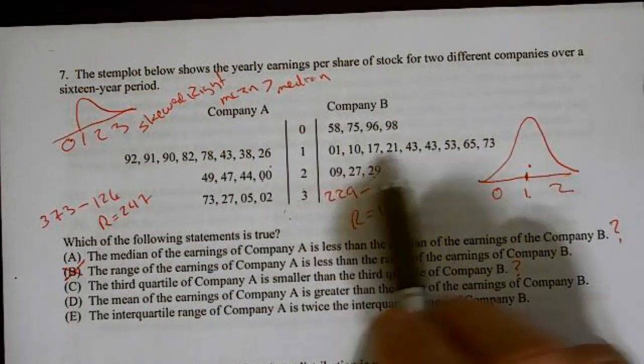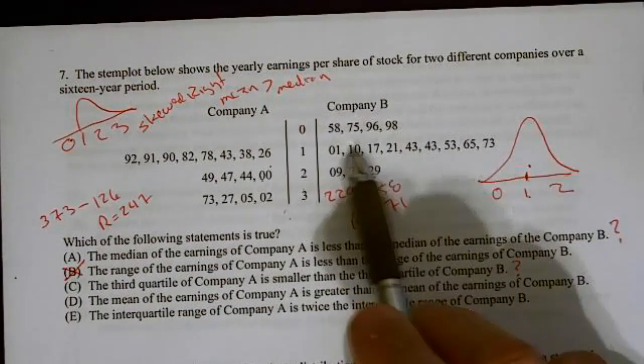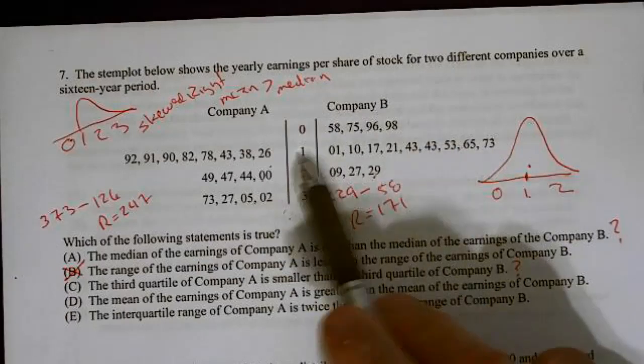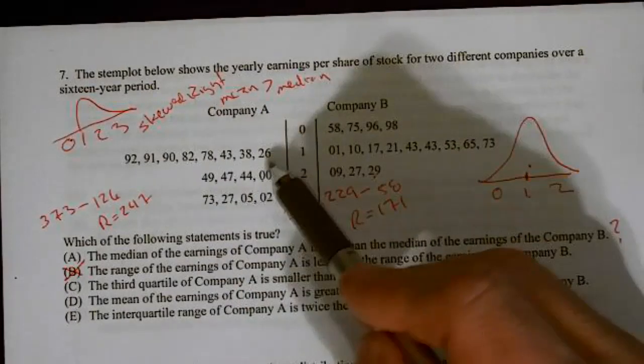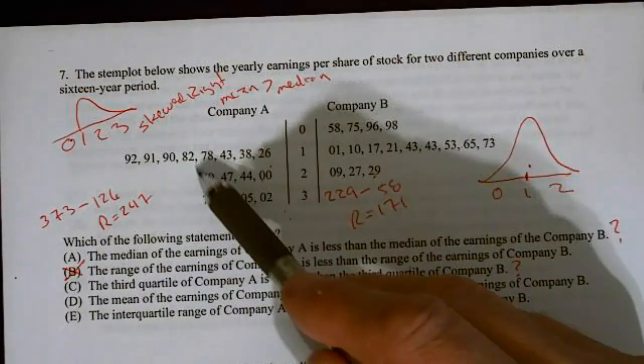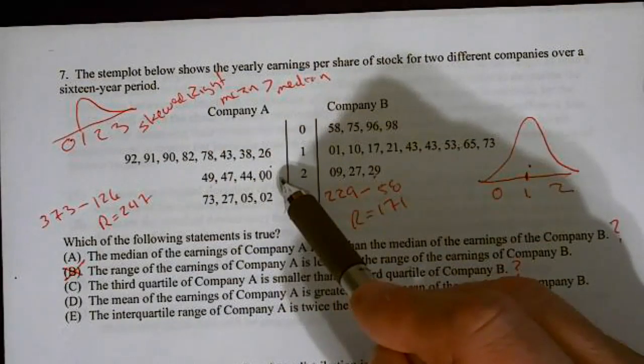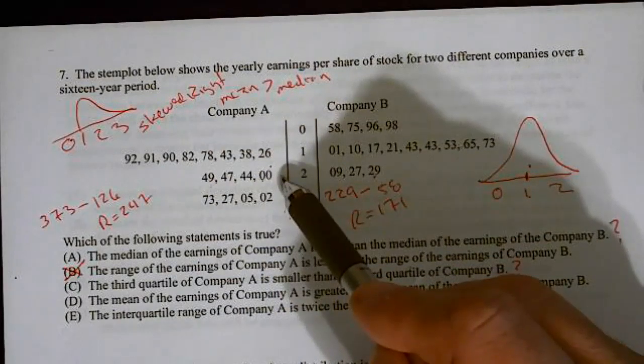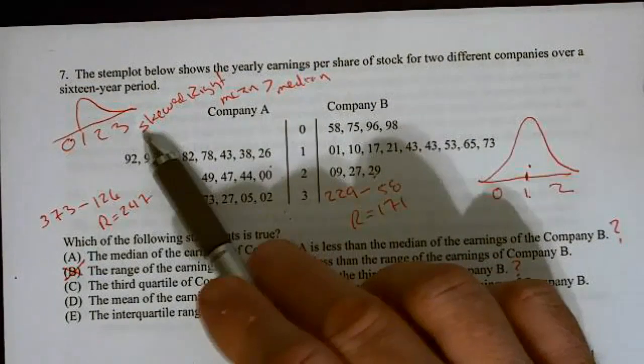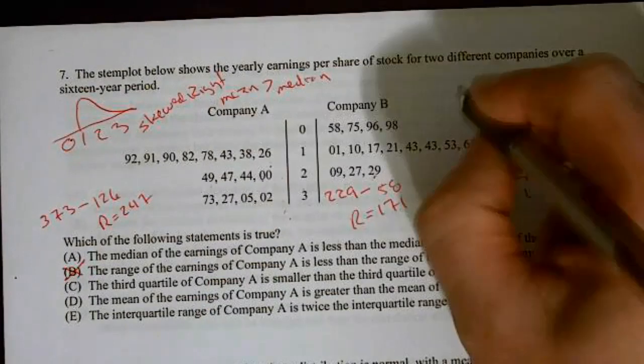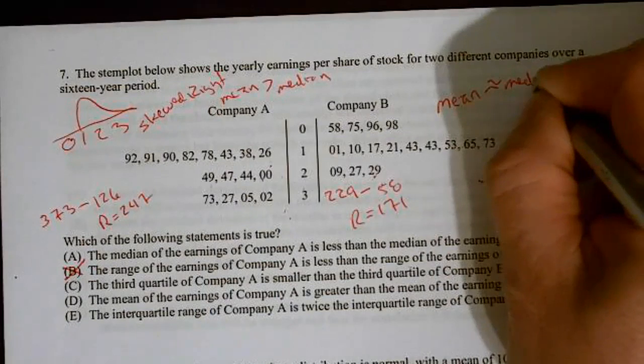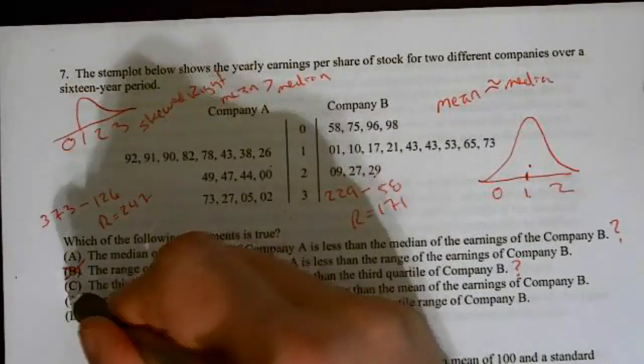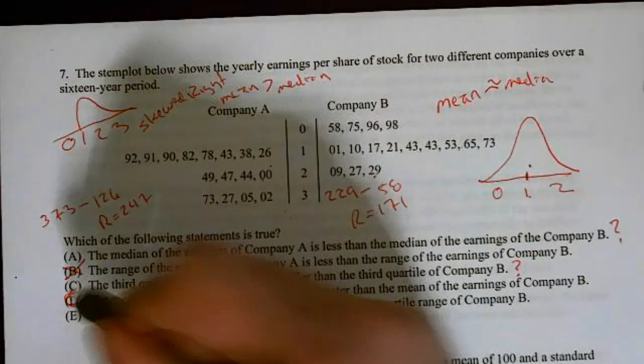The mean of the earnings of company A is greater than the mean of the earnings of company B. Well, this is skewed, so the mean and the median. This one is normal, so the mean and the median should be about the same spot. So the mean and the median are going to be somewhere over here. This one is skewed right, so my mean is going to be above the median, which means it's going to start. The very first number should probably start with the 2. This one's going to start with a 1. This was starting with a 2. This is skewed to the right, mean is greater than the median. Here the mean is approximately equal to the median. So right there, I'm pretty confident it's D without doing a whole lot of calculations. So 7D.